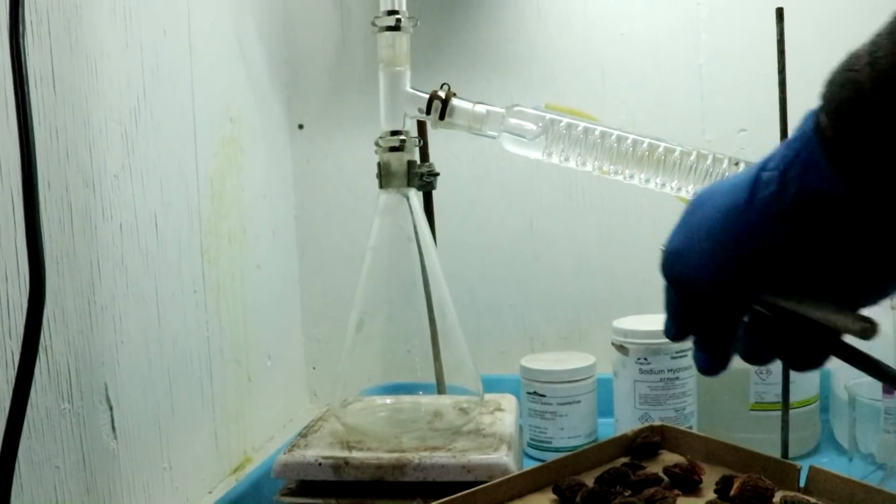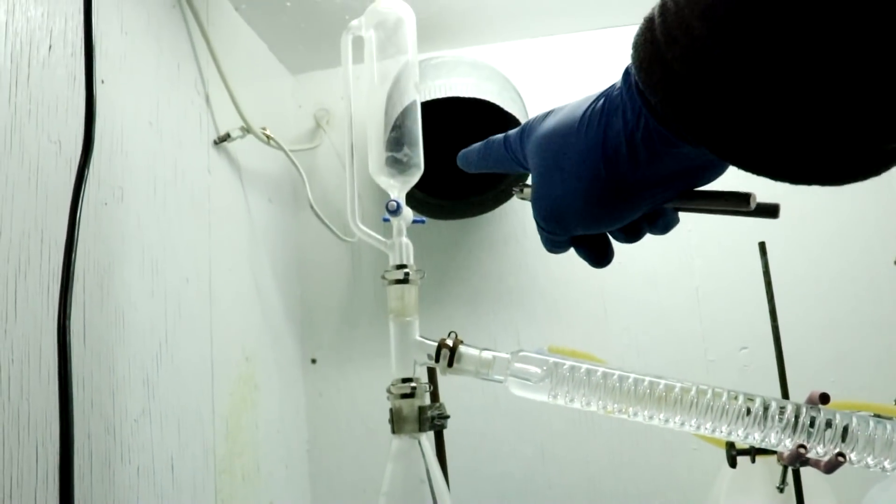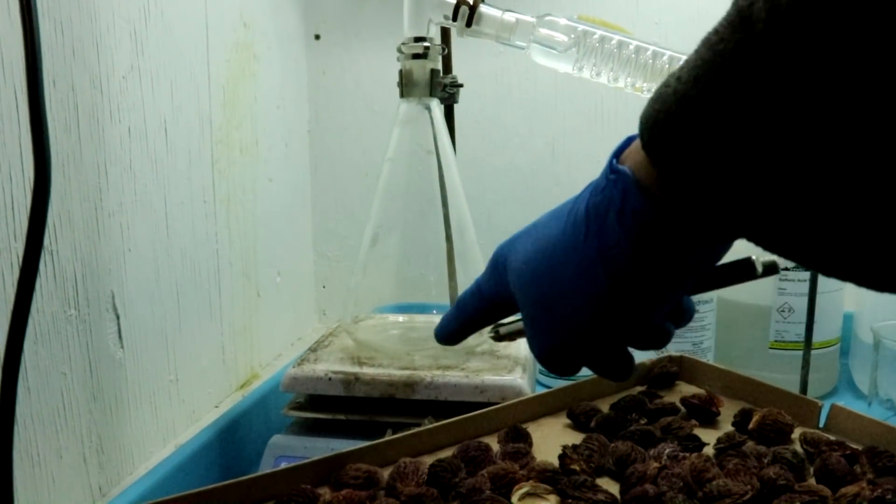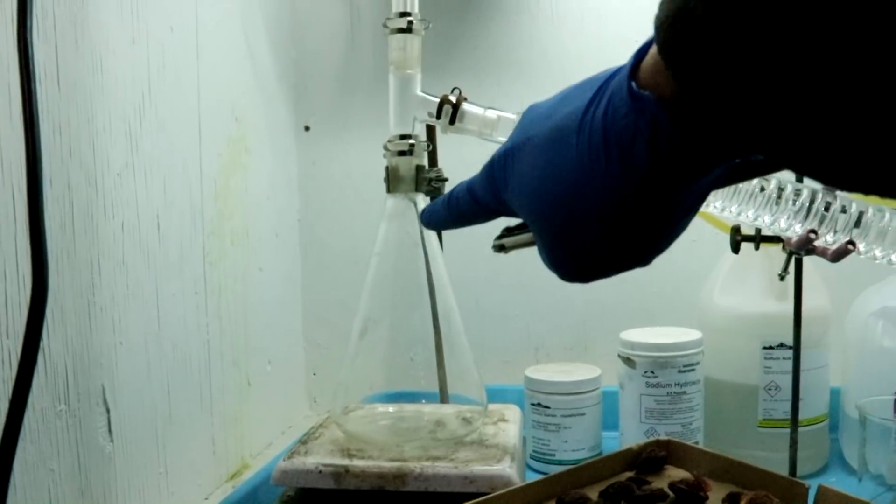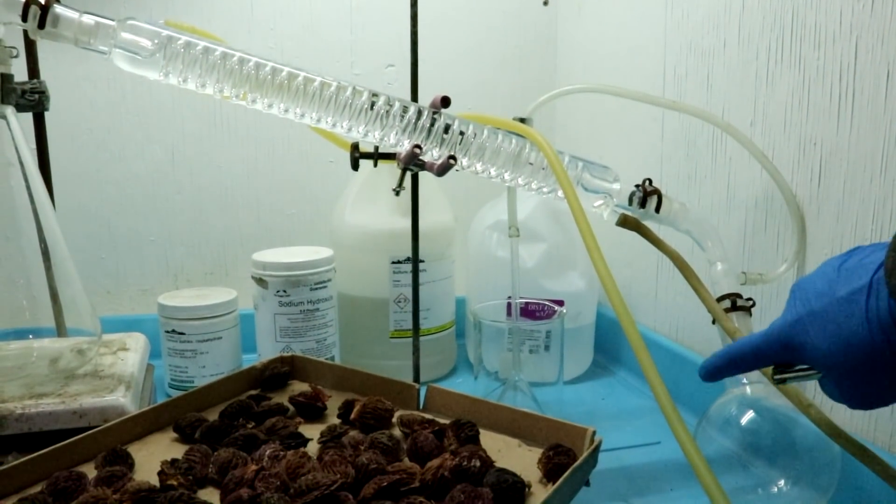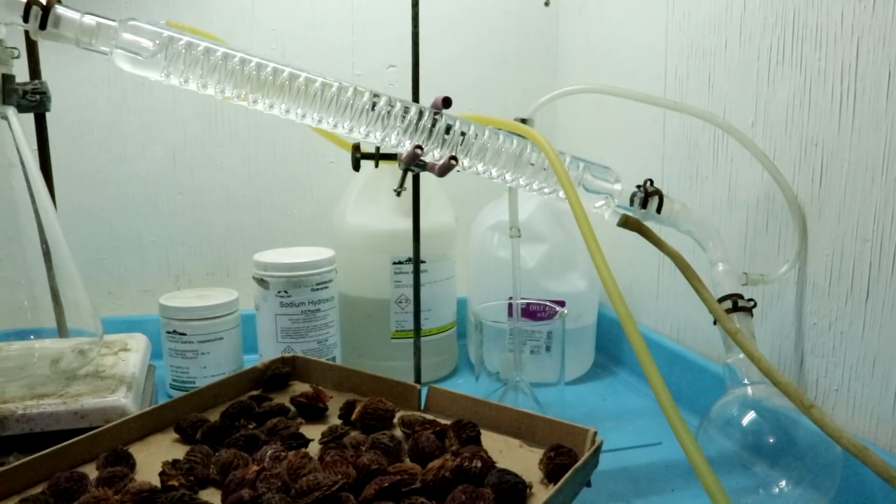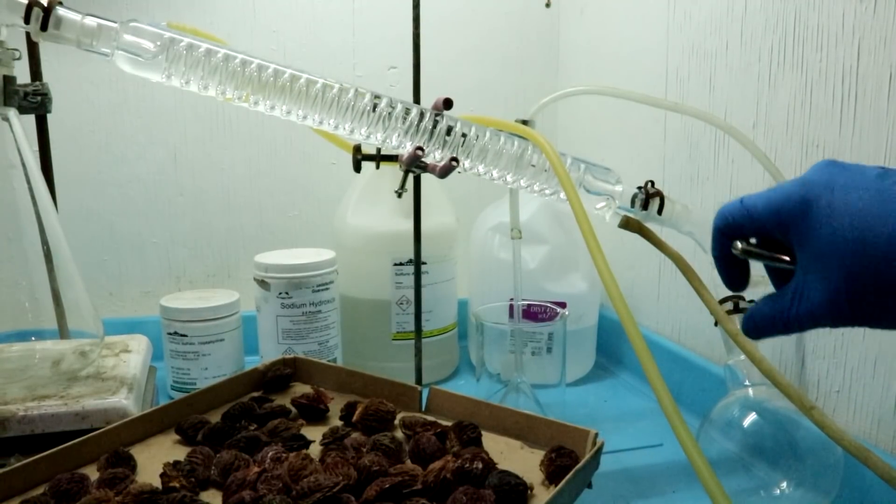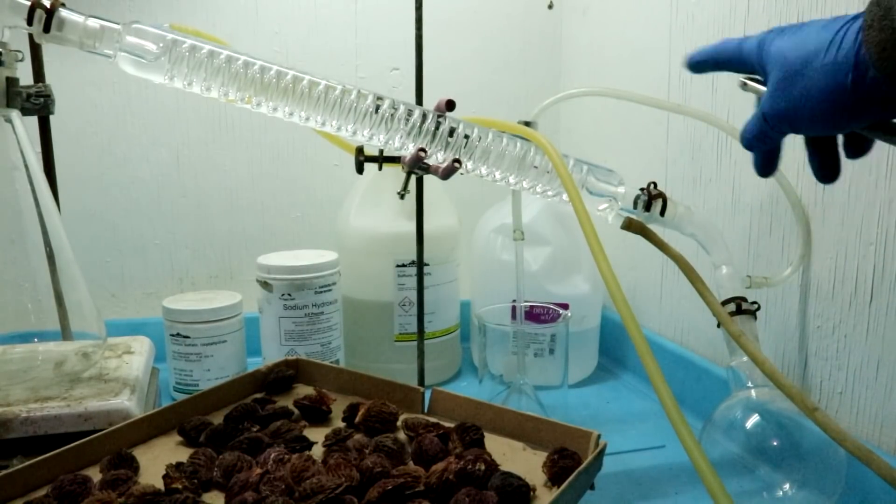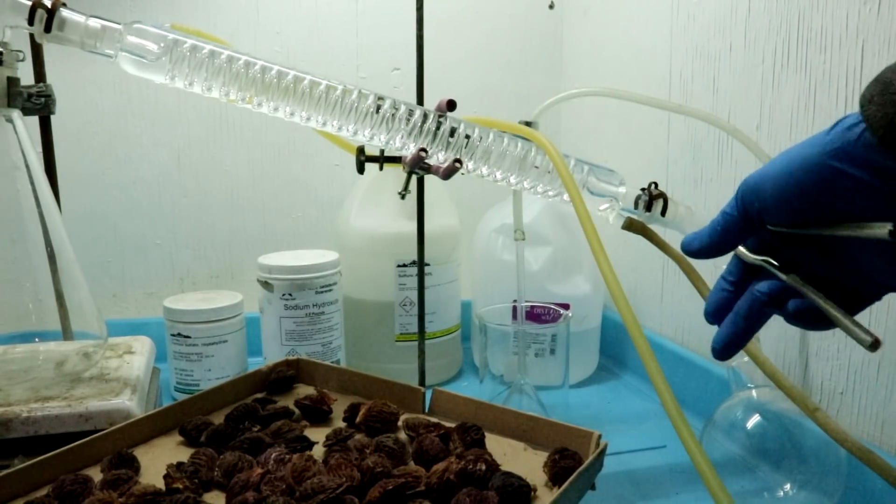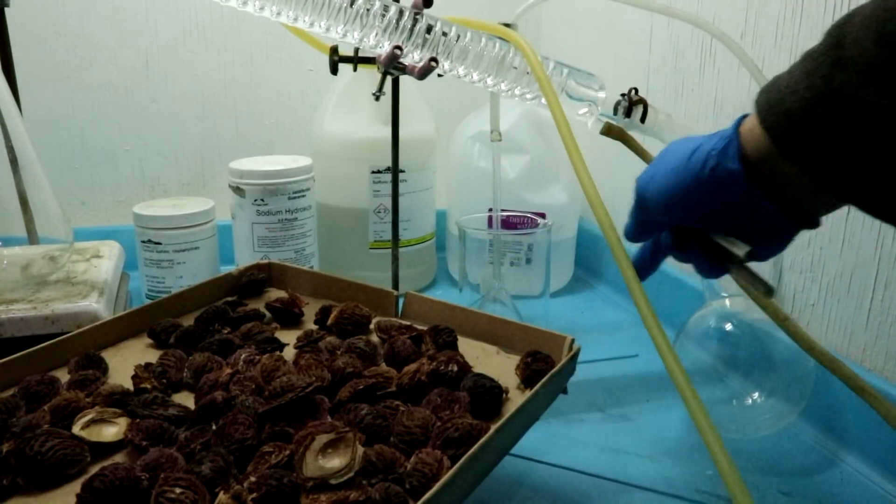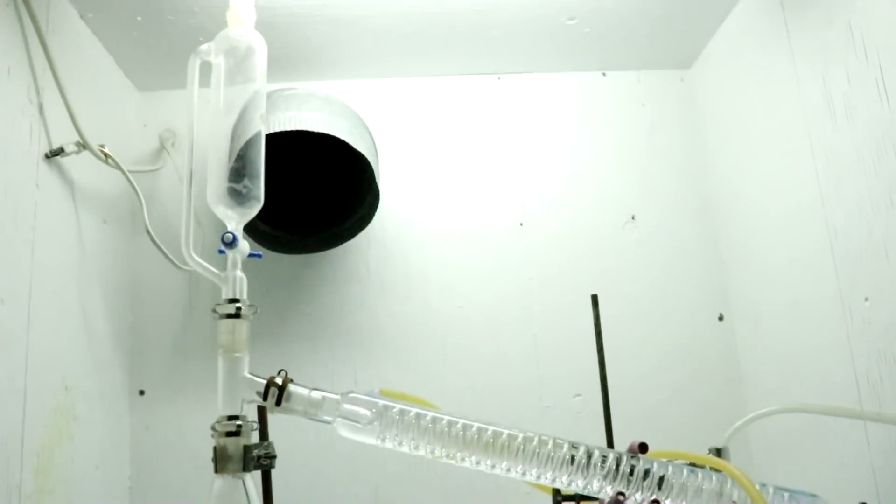Once they're in this flask I will add some water and then drip a strong acid onto it through this glassware. Then I will turn on the heat and distill over some of the water along with the prussic acid. And over here I will have some lye so as to neutralize the prussic acid so that it doesn't vaporize and get off into the air as it is a gas at room temperature. I will also have a secondary scrubbing flask over here and I'm doing this all inside of a fume hood.